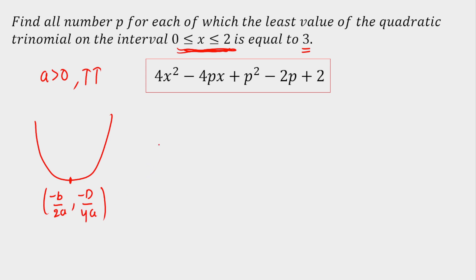Now, I cannot surely say that the vertex lies in 0 to 2. There must be cases. It is possible that the vertex lies in this interval, or the vertex does not lie in this interval. So I'm going to take Case 1 where the vertex lies in this interval.